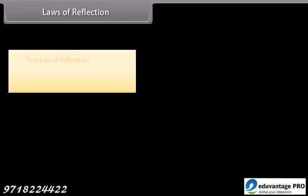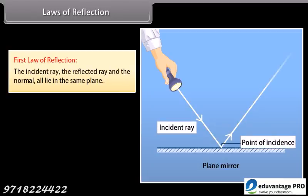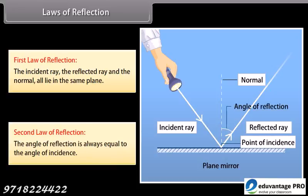Laws of reflection. First law of reflection: the incident ray, the reflected ray and the normal all lie in the same plane. Second law of reflection: the angle of reflection is always equal to the angle of incidence.